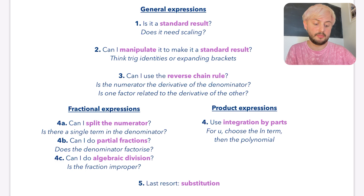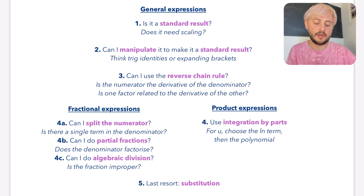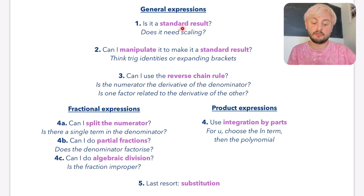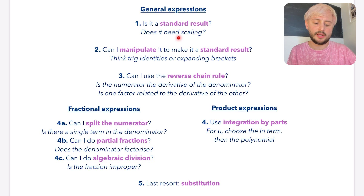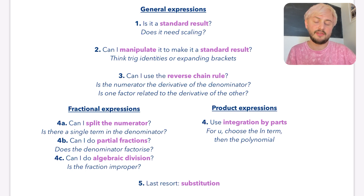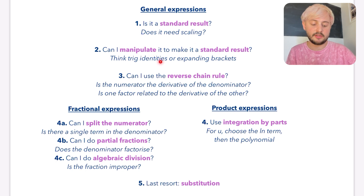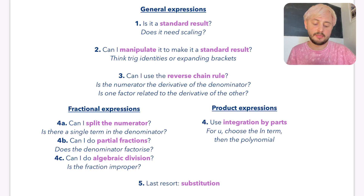So as you can see here, I've got a flow chart that should take you through the different techniques that you might use. Starting off with general expressions, the first question you want to ask yourself is: is it a standard result? These are things you should have already memorised. Something else you might need to be careful of is, does it need scaling? The second question is, if it isn't a standard result already, can I manipulate it to make it into a standard result? You might think about trig identities, expanding brackets, that kind of stuff.